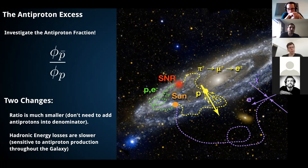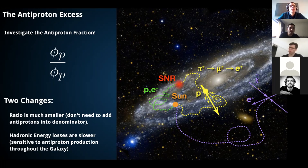What we typically measure is the antiproton fraction — the flux of antiprotons divided by the flux of protons. The reason people tend to measure this fraction rather than the raw antiproton flux is that it eliminates certain detector systematics common to both protons and antiprotons, such as the acceptance of the instrument at 1 GV versus 2 GV, whose uncertainties cancel out in the ratio.